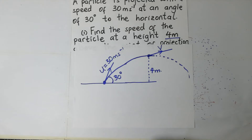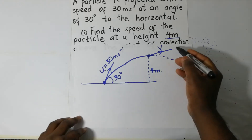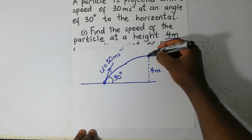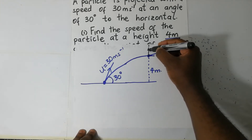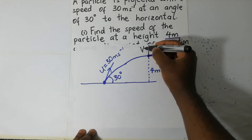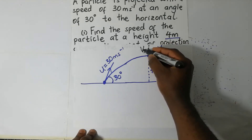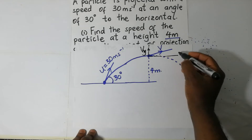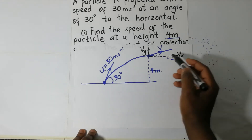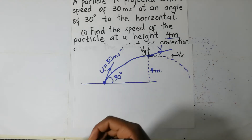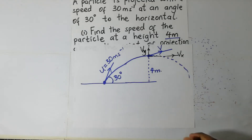Like we have been doing in our previous sessions, once it reaches that point, this is the final velocity. It has a velocity component in the x direction and a velocity component in the y direction. We find those two, and we are able to get the value of V at the point when displacement is four meters.